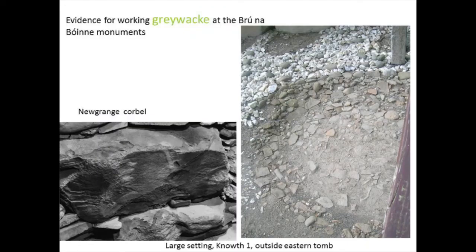When we go back to the Boyne Valley, we can see evidence for working greywacke both at Newgrange and at Knowth in different ways — for example, in the Newgrange corbel and in one of the settings outside Knowth, there are spalls from the greywacke that have been incorporated into the monument. I would like to suggest, with a question mark, that this is deliberate and not just debitage thrown to one side. If we accept that this stone is important, we should begin to raise the question of whether this debitage was also important to people.